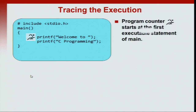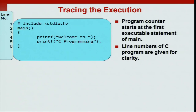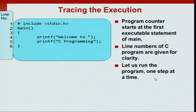Let us trace what happens when we execute the program. By tracing we mean step by step looking at each statement and seeing what happens when the program executes. We have what is known as a program counter, which says here is the currently executing line of the program. The program counter starts executing at the first statement of main. For ease of reference, I have given line numbers in the code. Now let us see what happens when we run the program line by line.